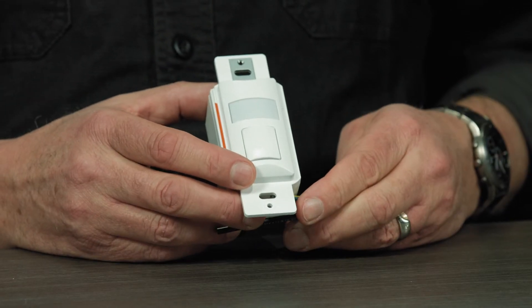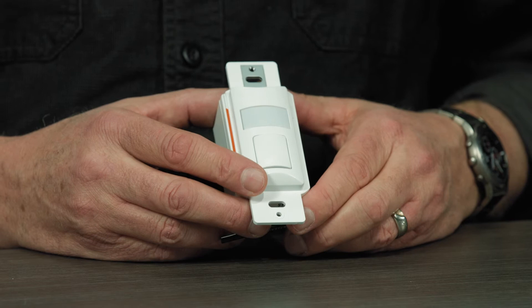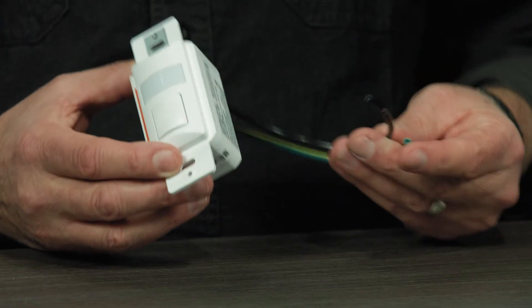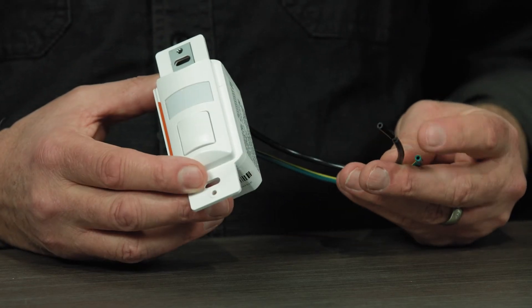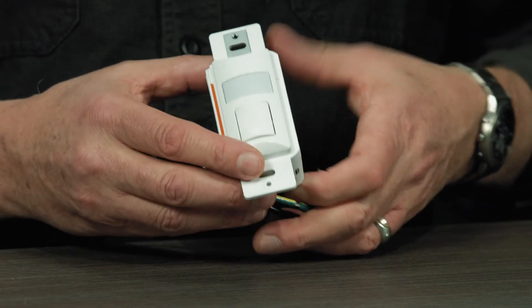It can be available as a passive infrared or a dual tech model. Additionally you can get it as a battery version only or as a line voltage no neutral design. This is the line powered version.